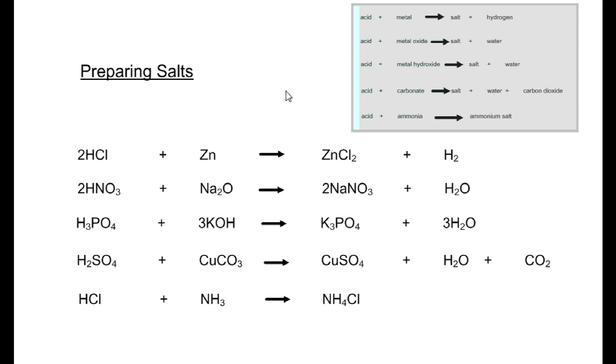Another important point is that to produce specific salts, we have to use the appropriate acid. If we want to produce a chloride salt, we use hydrochloric acid. If you want a nitrate salt, we must use nitric acid.